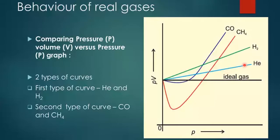There are two categories of graphs. The first is for helium and hydrogen, and the second is for carbon monoxide and methane. In the case of hydrogen and helium, at all pressures they are above the ideal gas line, whether at low or high pressure. Whereas for carbon monoxide and methane, at low pressure there is a dip below the ideal line, and then as pressure increases PV slowly rises, crosses the ideal line, and goes above it.